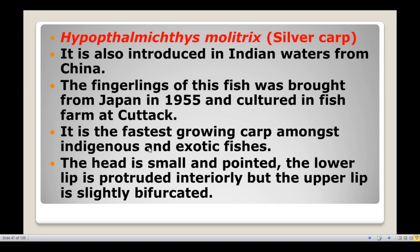Next is Hypophthalmichthys molitrix, commonly known as Silver Carp. It is also introduced into Indian waters from China. Silver carp fingerlings were introduced in India in 1955. It is the fastest growing carp among both indigenous and exotic fishes.